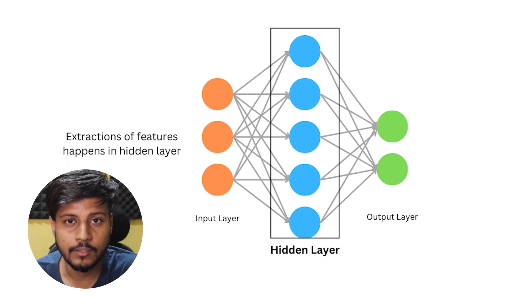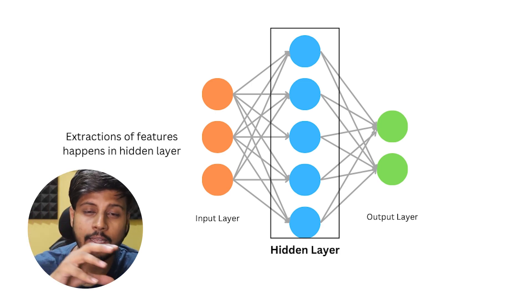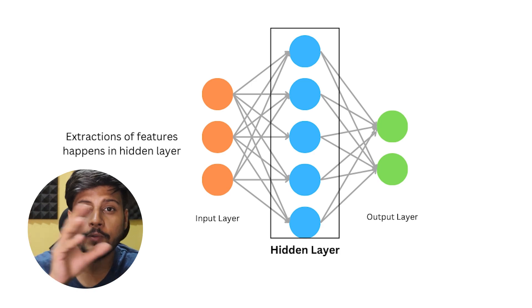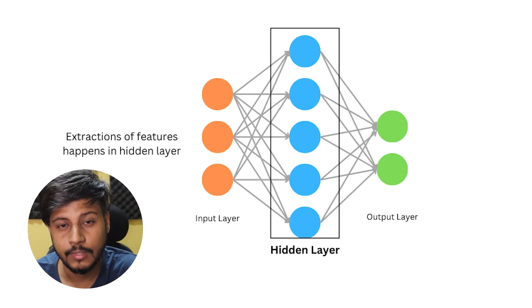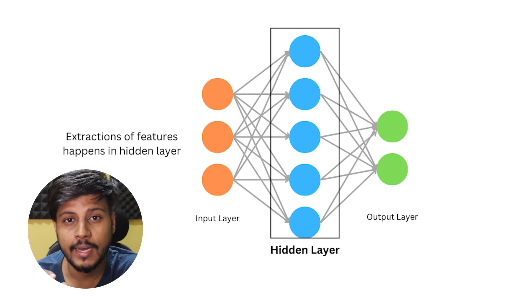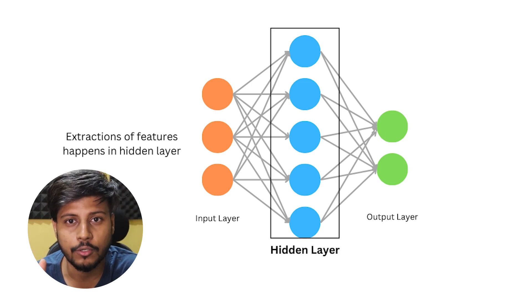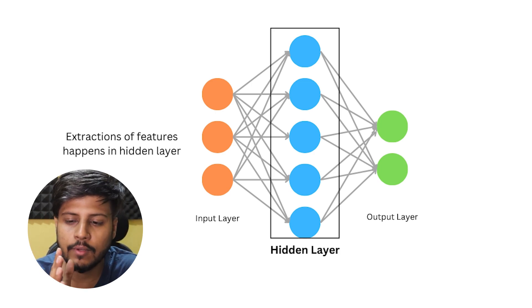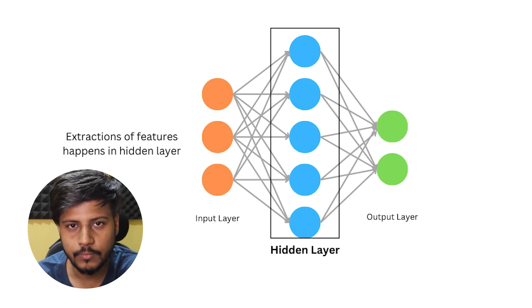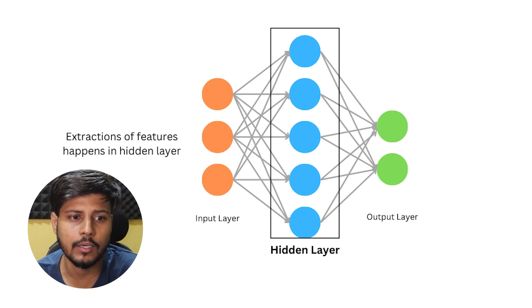In the hidden layer, the neurons collect inputs from the previous layer and we compute a weighted sum. This weighted sum decides whether a neuron should be activated or not. Basically, if the value is near to 0 it won't be activated, and if the value is near to 1 it will be activated.